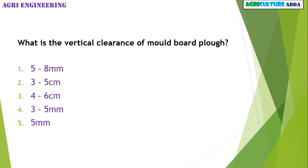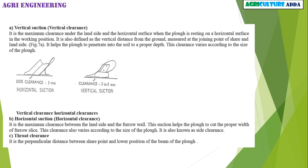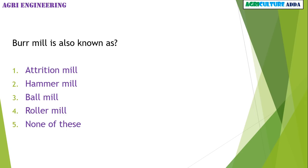In the agri-engineering section: what is the vertical clearance of a moldboard plow — 5 to 8 mm, 3 to 5 cm, 4 to 6 cm, 3 to 5 mm, or 5 mm? The answer is 3 to 5 mm. The horizontal clearance value and vertical clearance value are both important to remember.